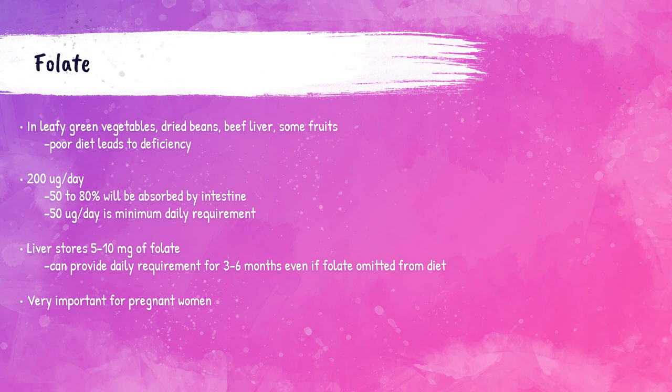Folate, or folic acid, is a vitamin important in the formation of DNA and red blood cells. It's found mostly in dark leafy green vegetables, beans, beef liver, and fruits like oranges and strawberries. The recommended daily amount is around 200 micrograms a day, with 50 micrograms being the minimum daily requirement. About 50 to 80% is absorbed by the intestine. The liver stores around 5 to 10 milligrams of folate, which can provide the necessary daily requirement for around three to six months.